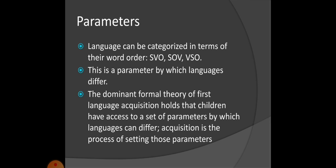Language can be categorized in terms of their word order. In English, we talk about subject, verb, and object. There can be many word order patterns such as SVO, SOV, etc. This is a parameter by which languages differ across languages — for example, Urdu, Arabic, French, and English have different parameters for word order and sequence. The dominant formal theory of first language acquisition holds that children have access to a set of parameters by which languages can differ, and acquisition is the process of setting those parameters.